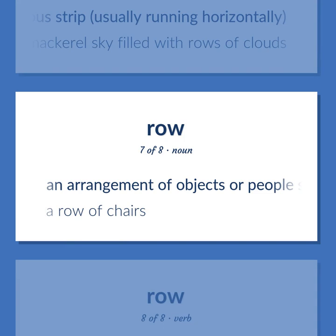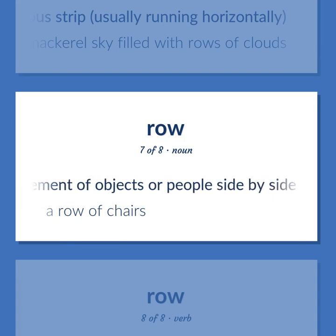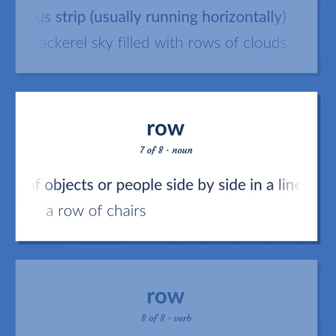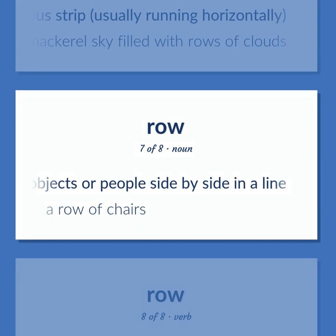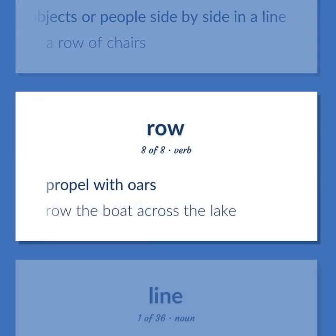An arrangement of objects or people side by side in a line. A row of chairs. Propel with oars. Row the boat across the lake.